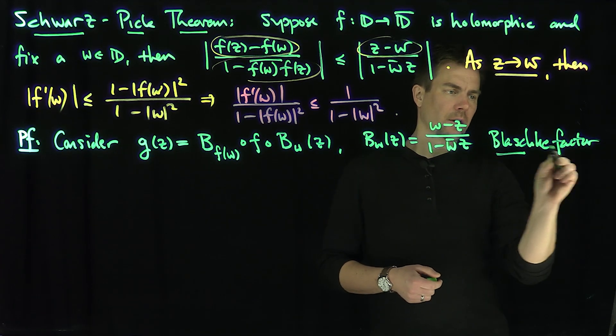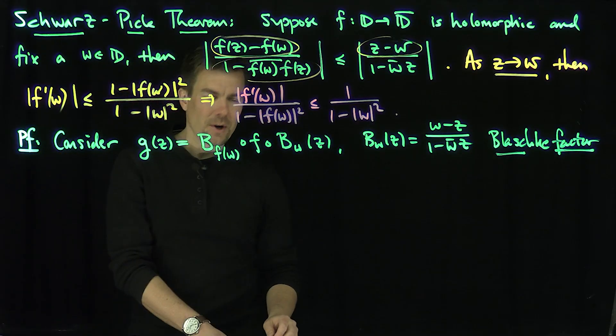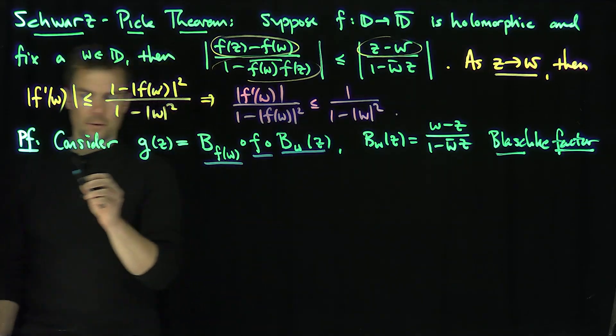We know these Blaschke factors are conformal automorphisms of the disk. Now let's check one thing. Clearly, this maps D to D, this maps D to D, and this maps D to D. Let's find out what g(0) is.